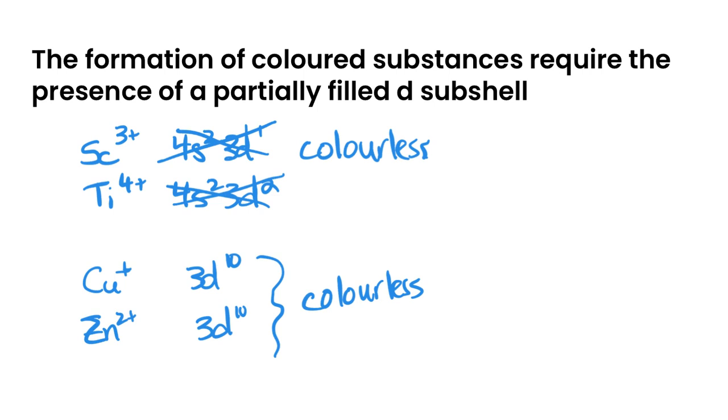So using the color wheel, we can figure out the different light absorbed. We can figure out what color we should expect to see, and we can explain why the colors arise due to the splitting of the d orbitals themselves. That's it then for this video. We'll see you in the next one.